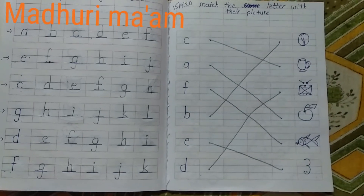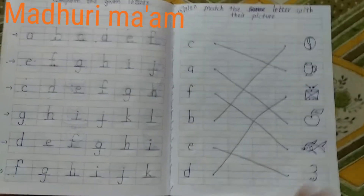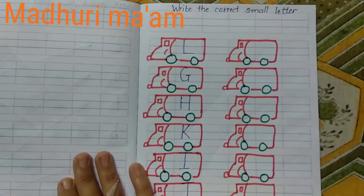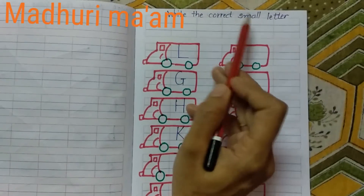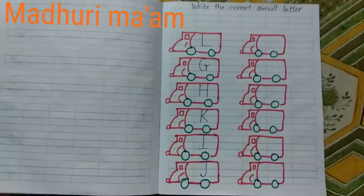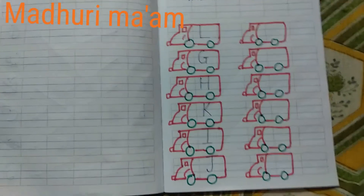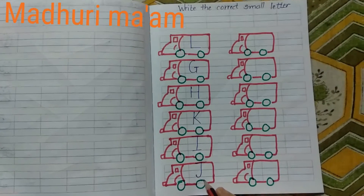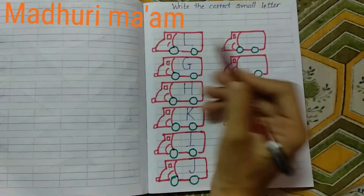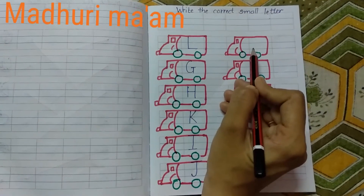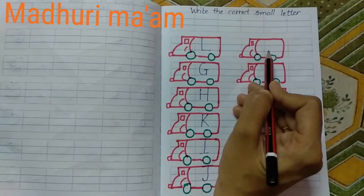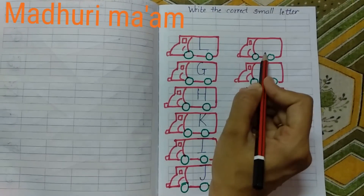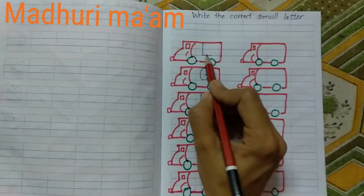You have to do this activity very neatly and cleanly. Then on the next page we do one more activity. In this activity, what to do — look here: write the correct small letter. We have to write the correct small letter. So first of all, on the left side the teacher has written capital letters, and you have to write the related small letter. Teacher has taught the small letters to everyone — you know them, right? So first read the first letter, then write the small letter.